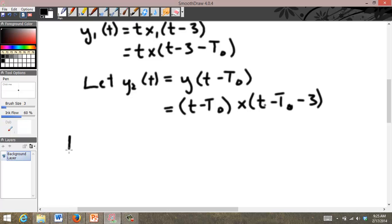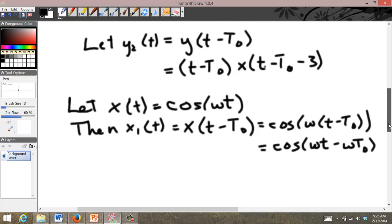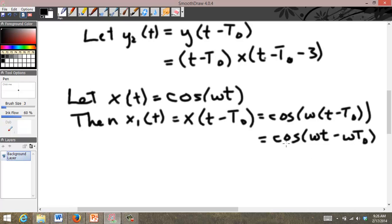If you want to think about it a different way, let's think of a specific example. Let x of t equal a cosine, cosine omega t. Then x1 of t equal to x of t minus t0 is cosine omega times t minus t0, which is equal to cosine of omega t minus omega t0.